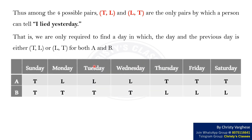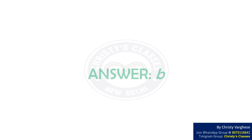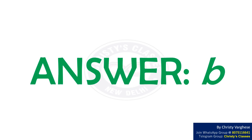From the table, we can observe that only when today is Thursday and yesterday was Wednesday do T,L or L,T occur for both A and B. Hence, option B is the right answer.